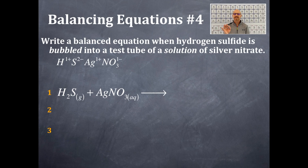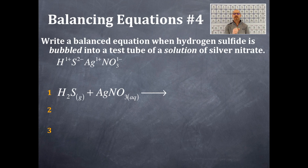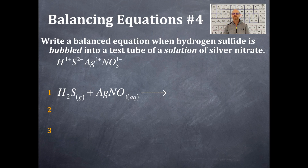Now I have my reactants. I need to figure out what type of reaction this is. I put these two reactants together by taking the cation and the anion and combining them — the cation of hydrogen and the anion of sulfide, and the other combination of the cation of silver and the anion of nitrate. So this is a double displacement type of reaction.